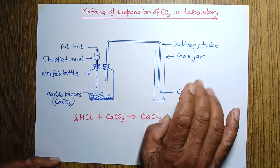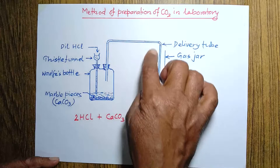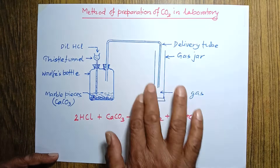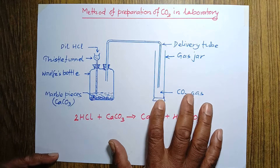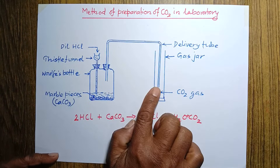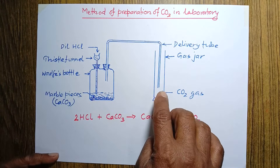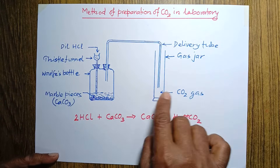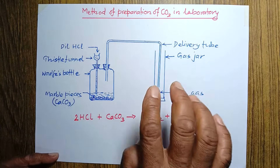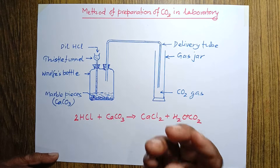Another matter is how we can collect this carbon dioxide gas in an upright gas jar. It is possible because carbon dioxide gas is heavier than air. When it is delivered inside the gas jar, because of being heavy it goes down, and the air previously present inside the gas jar is displaced upward. By the upward displacement of air, carbon dioxide gas is collected in the upright gas jar.